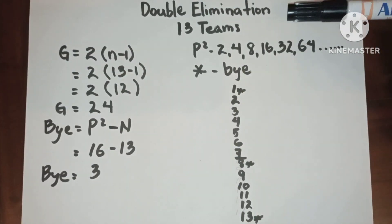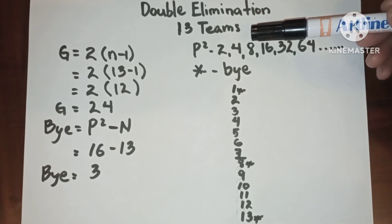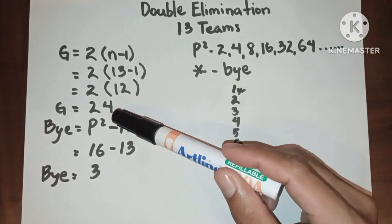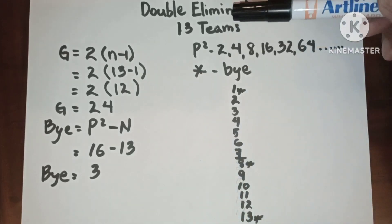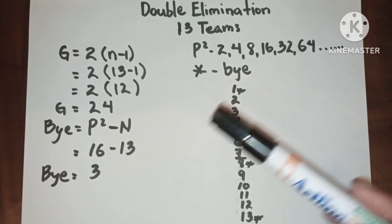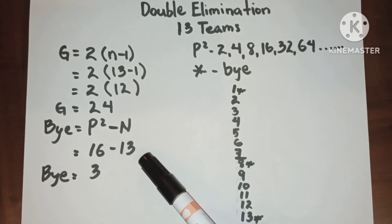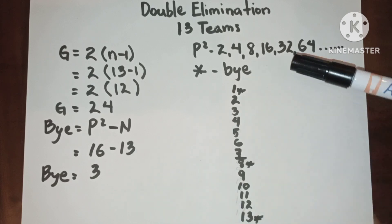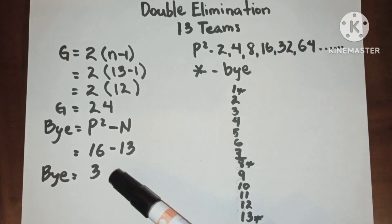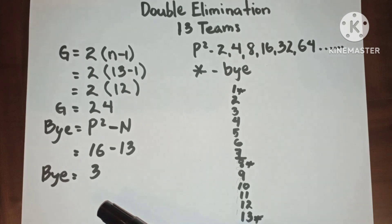This is double elimination with 13 teams, or 13 number of entries. In 13 teams we have 24 games. Since 13 is not included in the power of 2s, it has a bye. To determine the bye, we use: bye equals power of 2 minus n. The next higher power of 2 to 13 is 16, so 16 minus 13 equals 3, meaning we have three byes.